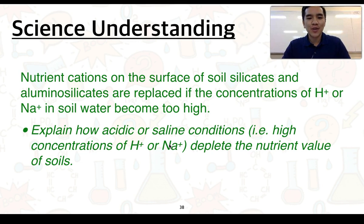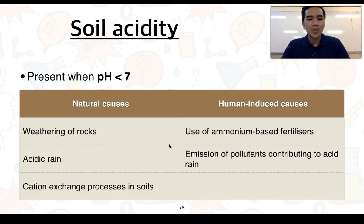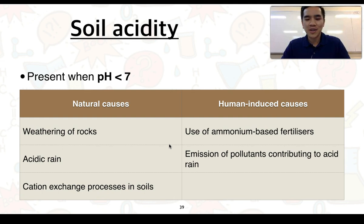This is the final science understanding for 4.3: nutrient cations on the surface of soil silicates and aluminosilicates are replaced if the concentrations of H⁺ or Na⁺ in soil water become too high. We need to explain how acidic or saline conditions deplete the nutrient value of soils. Soil acidity is present when the pH is less than 7. It can be caused naturally through weathering of rocks, acidic rain when CO₂ dissolves in rainwater, and cation exchange processes. It can also be human-induced through ammonium-based fertilisers and pollutants such as nitrogen and sulfur oxides contributing to acid rain.